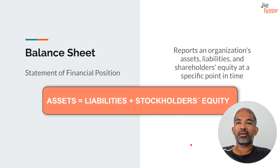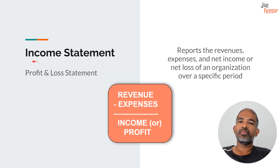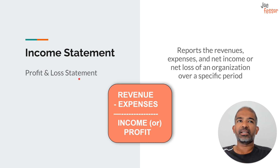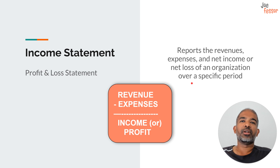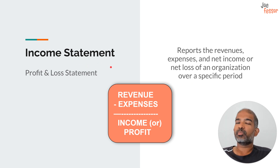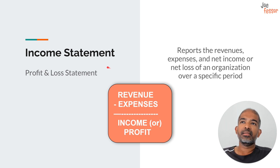The next statement is the income statement, also known as the profit and loss statement, because it reports the revenues, expenses, and the net income or loss of a firm over a specific period — let's say for a particular fiscal year. The income statement can provide a snapshot of the profitability and performance of a firm. This information is very useful to the various stakeholders such as creditors and lenders.